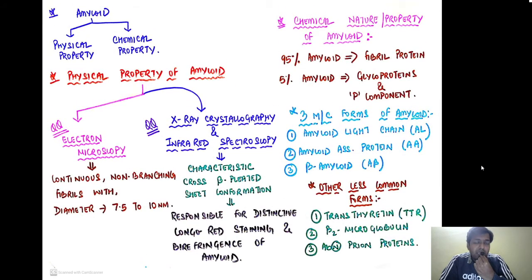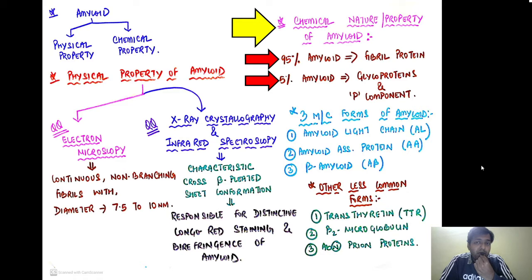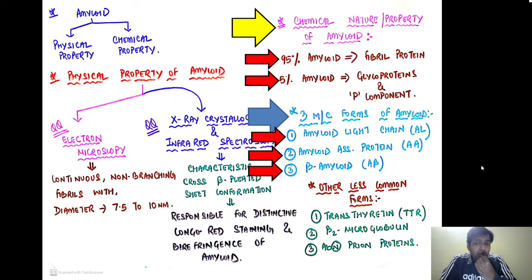Regarding the chemical property: 95% of amyloid is composed of fibril protein, whereas 5% is composed of glycoproteins — the glycosaminoglycans and proteoglycans — along with the plasma P component. The three most common forms of amyloid are: amyloid light chain (AL), amyloid associated protein (AA), and beta-amyloid (A-beta). Less common forms include transthyretin, beta-2 microglobulin, and abnormal prion protein.